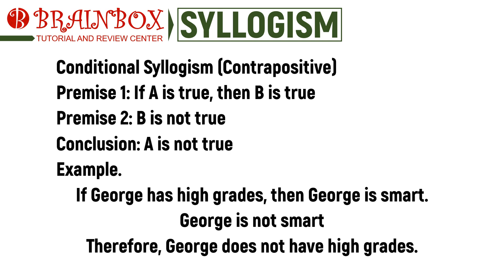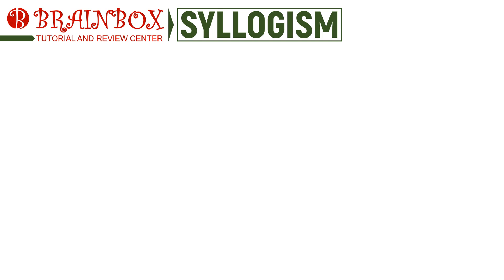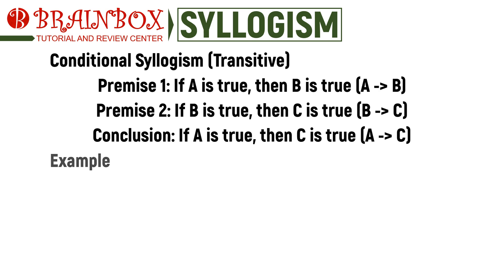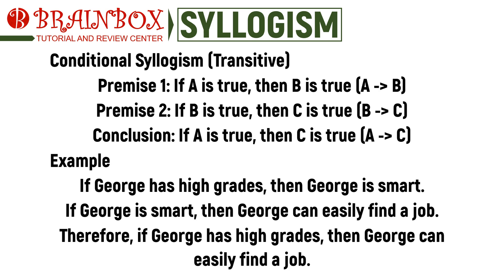The final form of conditional syllogisms is the transitive form, which looks very similar to a categorical syllogism, with the sole exception of having both premises and the conclusion as conditional if-then statements. Example: 'If George has high grades, then George is smart; if George is smart, then George can easily find a job; therefore, if George has high grades, then George can easily find a job.'